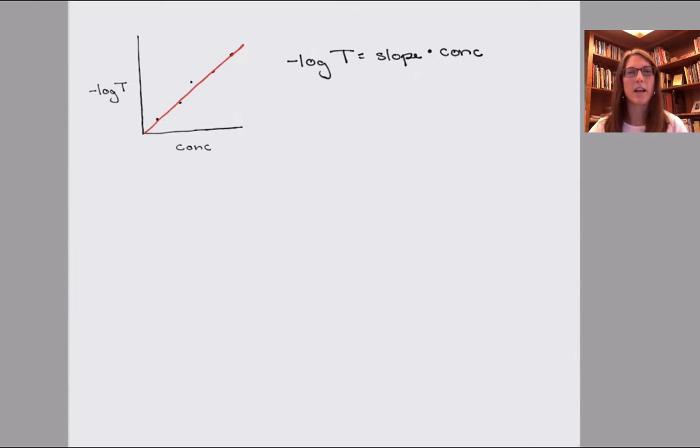So what does this mean and how does this relate to what ultimately is called the Beer-Lambert law? Well, negative log of T is given a special name, and that's called the absorbance.